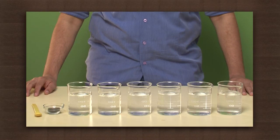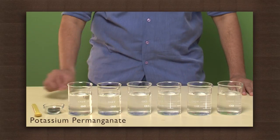Matter is composed of small particles, but how small are these particles? Let us try to understand this through an activity. We need some potassium permanganate and six glasses filled with water.